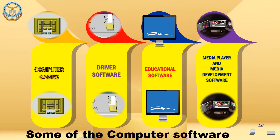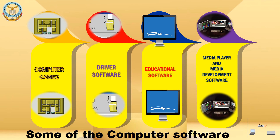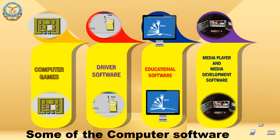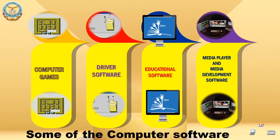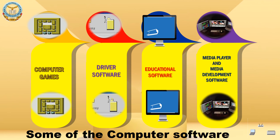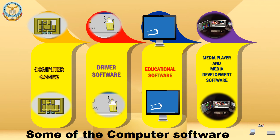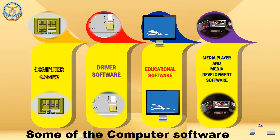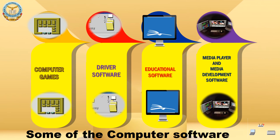Some of the computer software. Computer software is a set of programs to perform various types of operations. Computer games are a form of entertainment software; these include online games, action games, and adventure games. Driver software consists of programs that allow a computer to interact with additional hardware devices such as printers, scanners, and video cards. Educational software includes programs and games that teach the user or provide drills to help memorize facts.